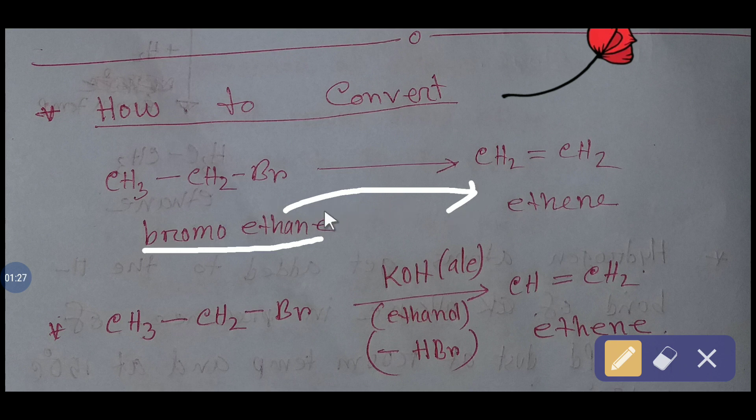To convert bromoethane to ethene, we have to create one double bond here, so we apply an elimination reaction. Bromoethane will react with alcoholic potassium hydroxide (KOH in ethanol). The bromine will take hydrogen from this carbon, so one molecule of HBr will be eliminated from bromoethane and we'll get ethene. This hydrogen bromide will react with potassium hydroxide.